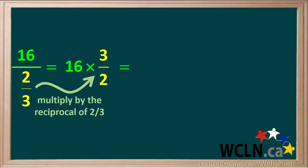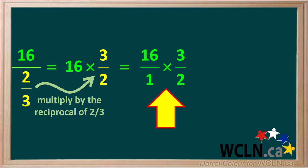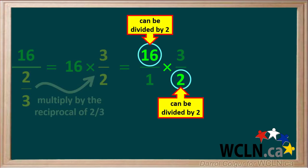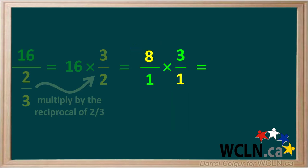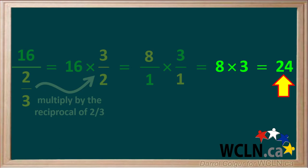16 is the same as 16 divided by 1, so we can express what we have like this: 16 over 1 times 3 over 2. Notice that the diagonal numbers 16 and 2 can both be divided by 2, so we'll do this to simplify the multiplication. Dividing 16 by 2 gives us 8, and dividing 2 by 2 gives us 1. So we're left with 8 over 1 times 3 over 1, which is the same as 8 times 3. And 8 times 3 equals 24, so 24 is our final answer.